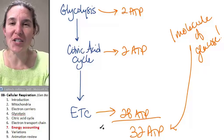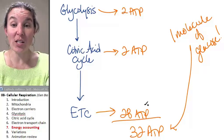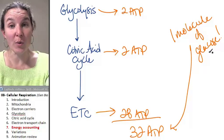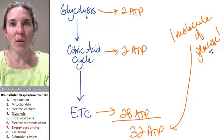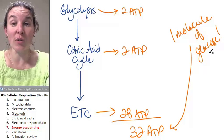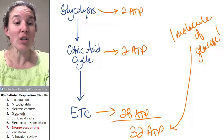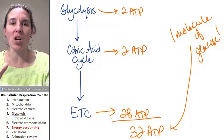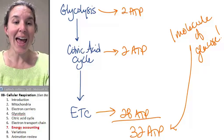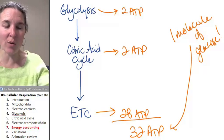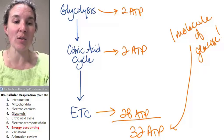There's variations on the theme. We just did glucose—we just gathered energy from glucose. You know that you eat more things than just glucose, and you can get energy from more things other than just glucose. So let's look at some variations on this pattern, and then we're going to do a gigantic review of the whole process so that you can visualize the whole thing.